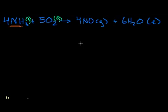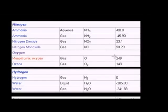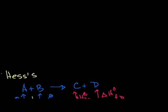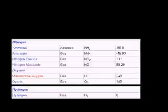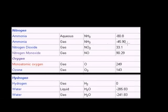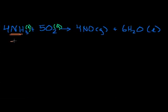Heats of formation are always given in kilojoules per mole — to form one mole of that substance. Ammonia in the gaseous state has a heat of formation of minus 45.9 kilojoules per mole. So minus 45.9 — that's for one mole of ammonia.